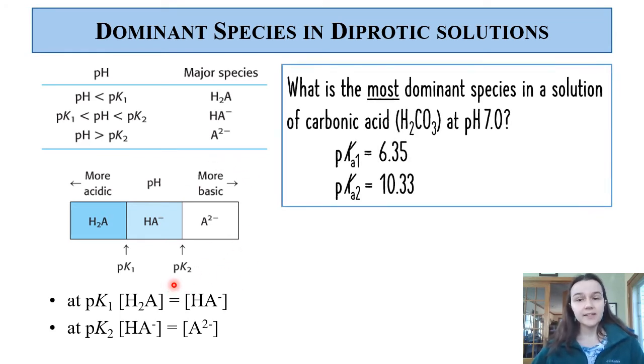Now, let's test ourselves. What is the most dominant species in a solution of carbonic acid if we're at pH 7.0 and the two pKa values are 6.35 and 10.33? Well, I would do two ladders, right? So I've got two rungs in my ladder. I have 6.35 and I have 10.33. Carbonic acid, H2CO3, we've seen earlier as our example of a polyprotic acid.